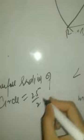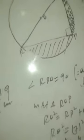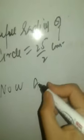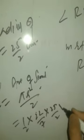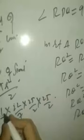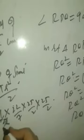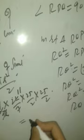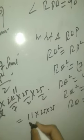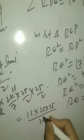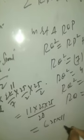Now we can find the area of the semicircle. Area of semicircle = (1/2)·π·r² = (1/2)·(22/7)·(25/2)·(25/2). Simplifying: the 2 in the denominator cancels with the 2 in 1/2, leaving 11. So we have 11 × 25 × 25 divided by 7 × 2 × 2, which equals 6875 divided by 28.